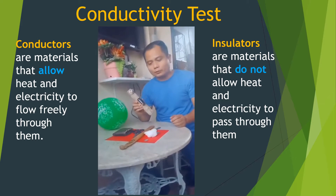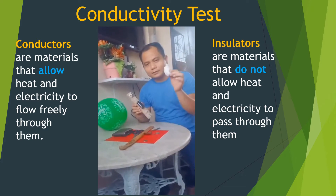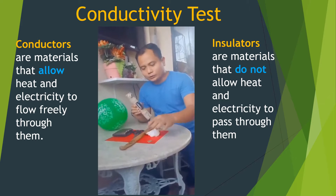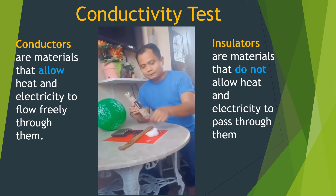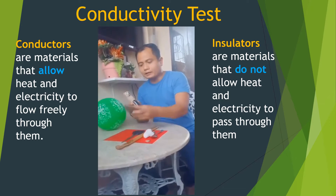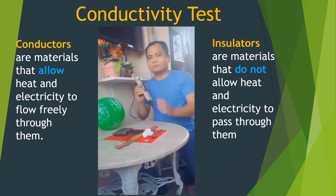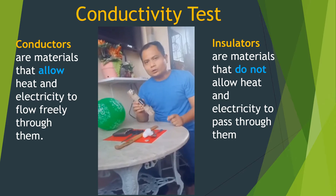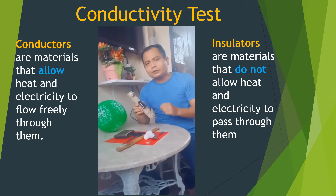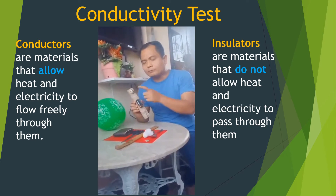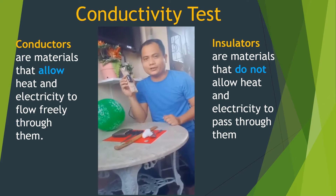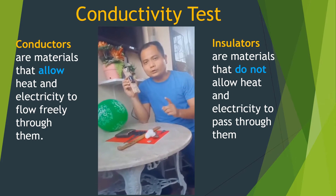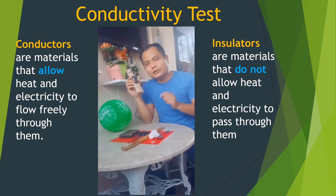We have here a conductivity tester and we are going to test the cotton, the 5-peso coin, a key, a metal spoon, a wood, a scissor, a wallet, and a balloon. If the light bulb turns on, the material is a conductor. Write your answers on your paper.